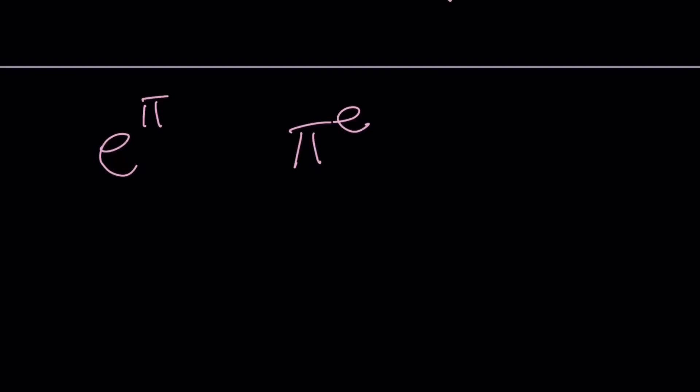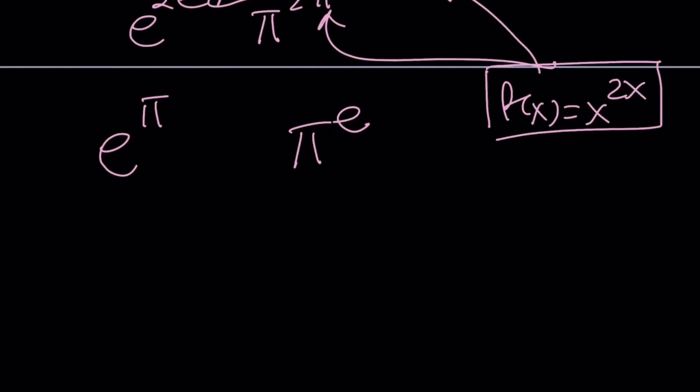If I try to make up a function and use it to model these numbers, I wouldn't be very successful because the base and the exponent are not related. For example, if you have something like e to the power 2e and π to the power 2π, then I could definitely go with f(x) equals x to the power 2x. But this is not the case. So how can I change these numbers so that e's are together on one side and π's are on the other?